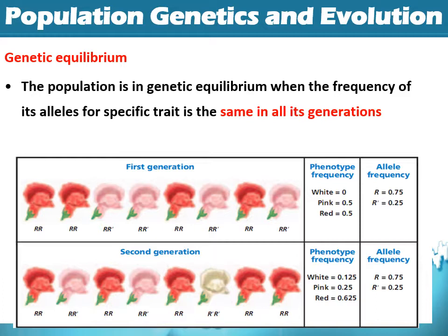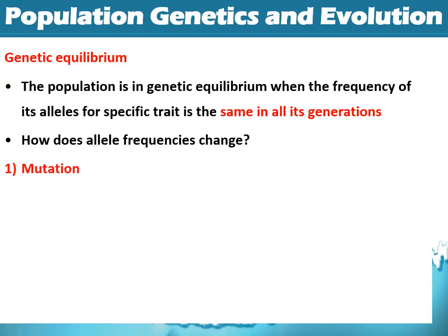You might think the population is evolving because the phenotypes look different. However, even though the phenotypic ratio is different, the allele frequency is still the same — still 75% and 25%. We've just remixed the alleles that already existed, and because of that we get different phenotypes, but the allele frequencies haven't changed. So even though phenotypically this generation looks different, they are still at genetic equilibrium. To change the allele frequency, we need to think about where allele frequency shifting is mostly going to come from.